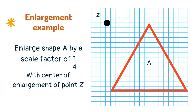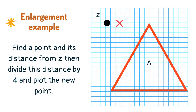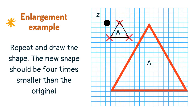As we are enlarging by a quarter, the resulting shape will be smaller. Find a point and its distance from Z, then divide this distance by 4 and plot the new point. Repeat and draw the shape. The new shape should be 4 times smaller than the original.